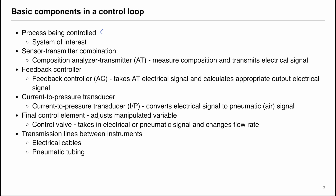First, we need to identify a process that we want to control — that will be the system of our interest. Within the system, we will want to have a sensor-transmitter combination. For example, that could be a composition analyzer that gives us the composition of a liquid. Its input is the composition, and it transmits or outputs an electrical signal. We denote this as AT, where A stands for analysis and T is transmitter, and it usually has the symbol of an AT circle.